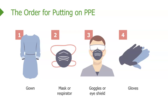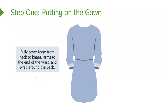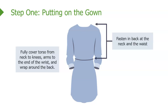Step one: put on the gown. It's really important that it covers the torso from the neck to the knees, and that it covers the arms all the way to the end of the wrist. The gown has cuffs to keep it close around your wrist. These gowns also wrap around the back and fasten at the neck and the waist.